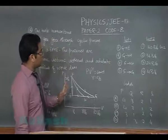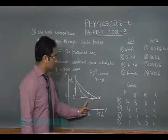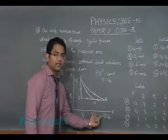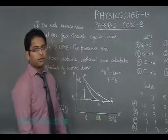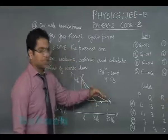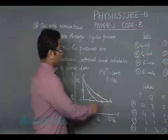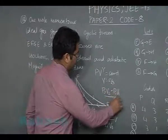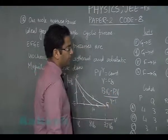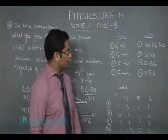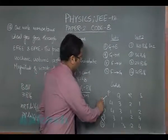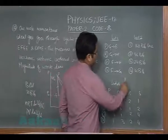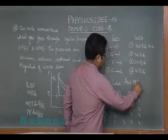Then option number Q, which is GH. GH work done can be found again by P naught into delta V, which would be 24 P naught V naught. And for FH adiabatic, the work done is P2 V2 minus P1 V1 by gamma minus 1, and all this will lead us to option number E. So the correct answer for question number 18 is E.